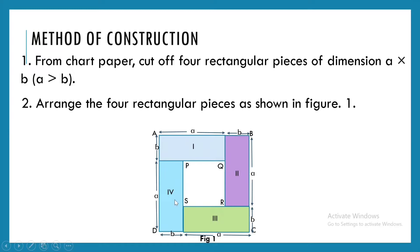What about the inner square PQRS? This complete side was A and this portion is B, so SR is A minus B. Similarly, QR is A minus B — the complete side was A and subtracting B gives A minus B. Exactly the same way, PQ is also A minus B and PS is also A minus B. So PQRS becomes a square of side A minus B, with one angle being 90 degrees confirming it is a square.